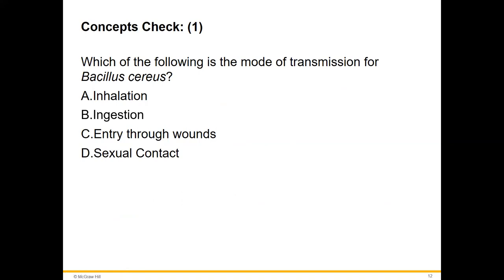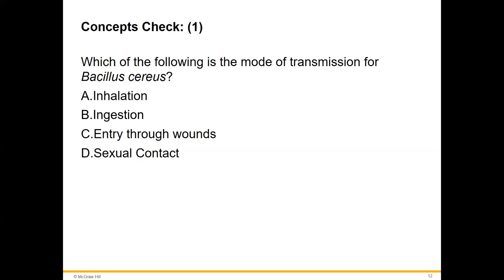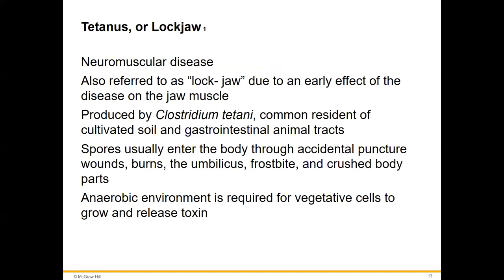Mode of transmission for Bacillus cereus is ingestion — that's the most common mode — not Clostridium perfringens, which enters through wounds and soil. Clostridium tetani is our next species: a spore-forming gram-positive rod causing tetanus or lockjaw.